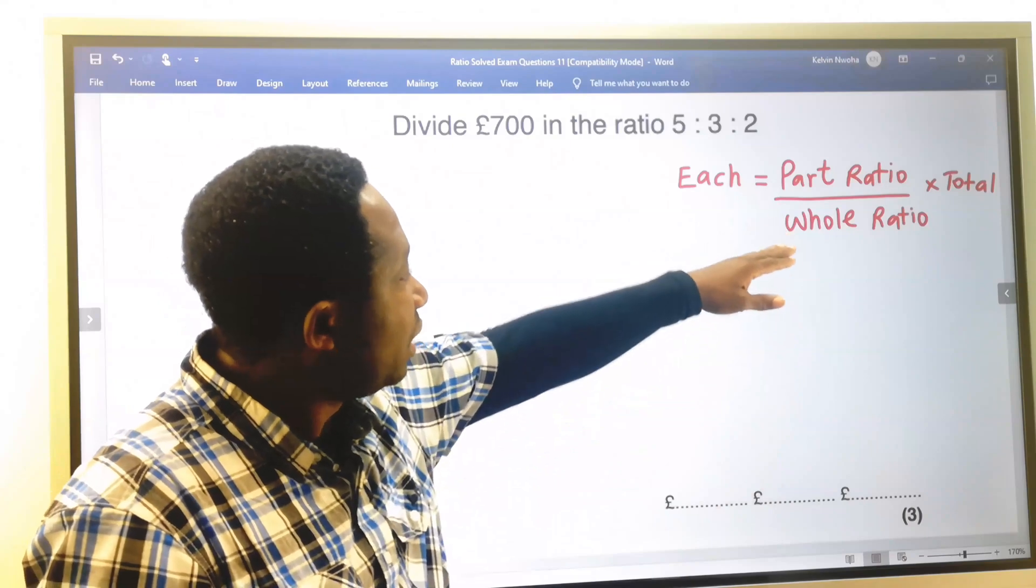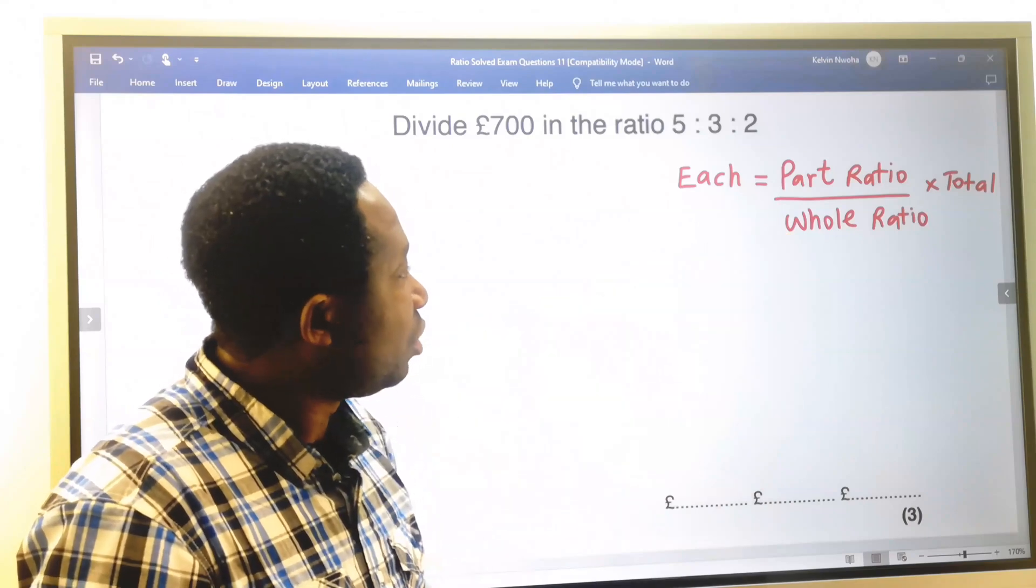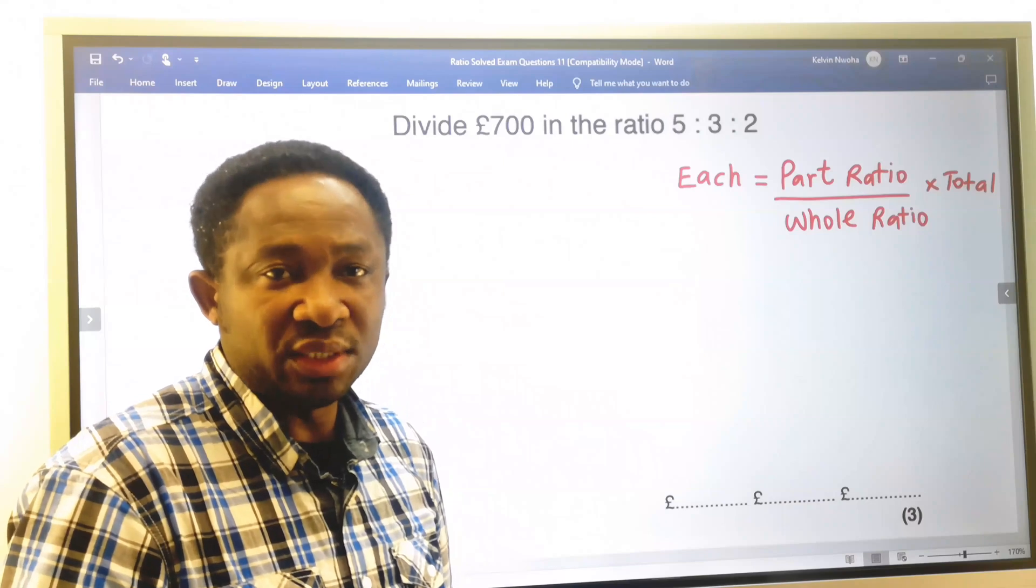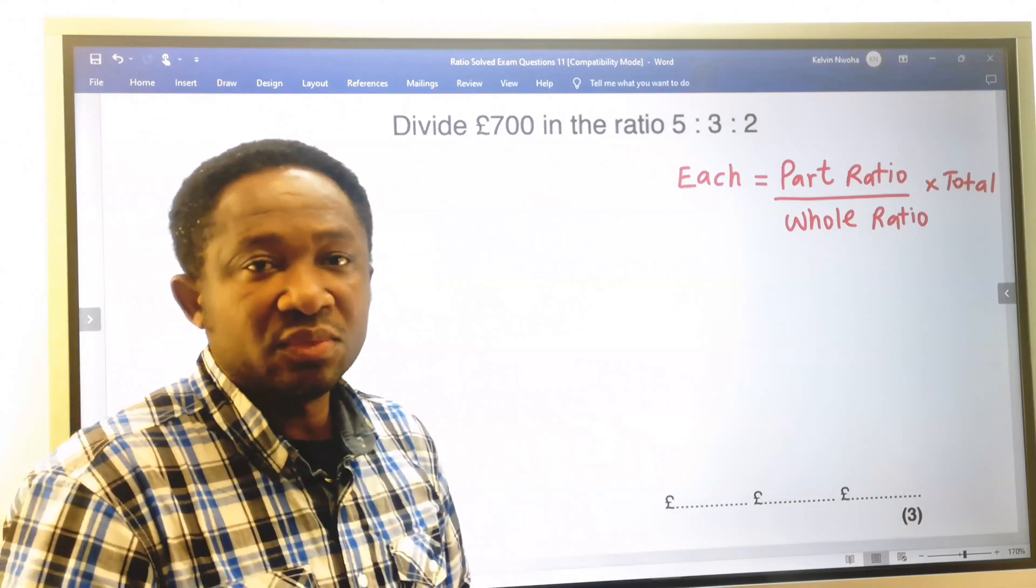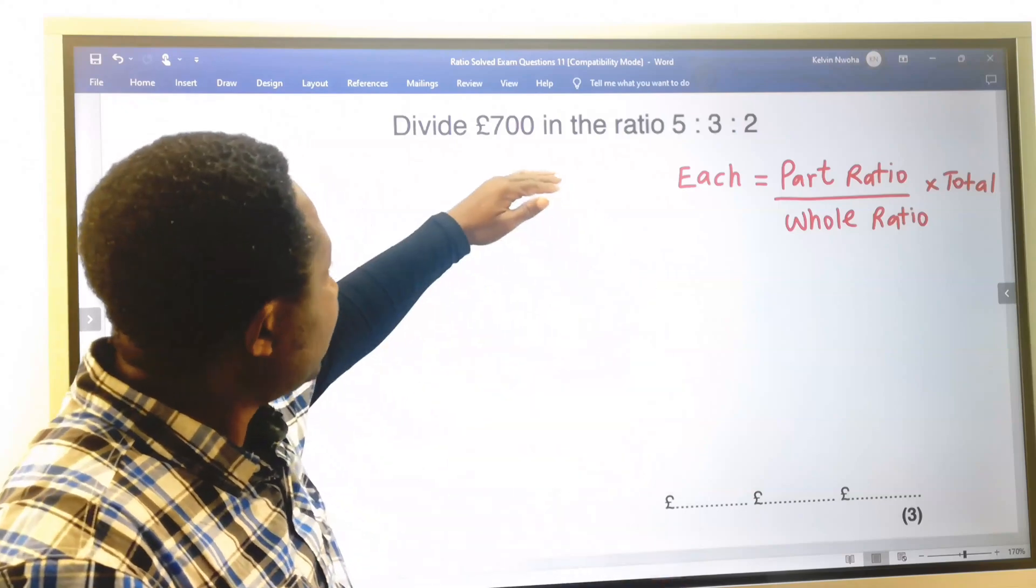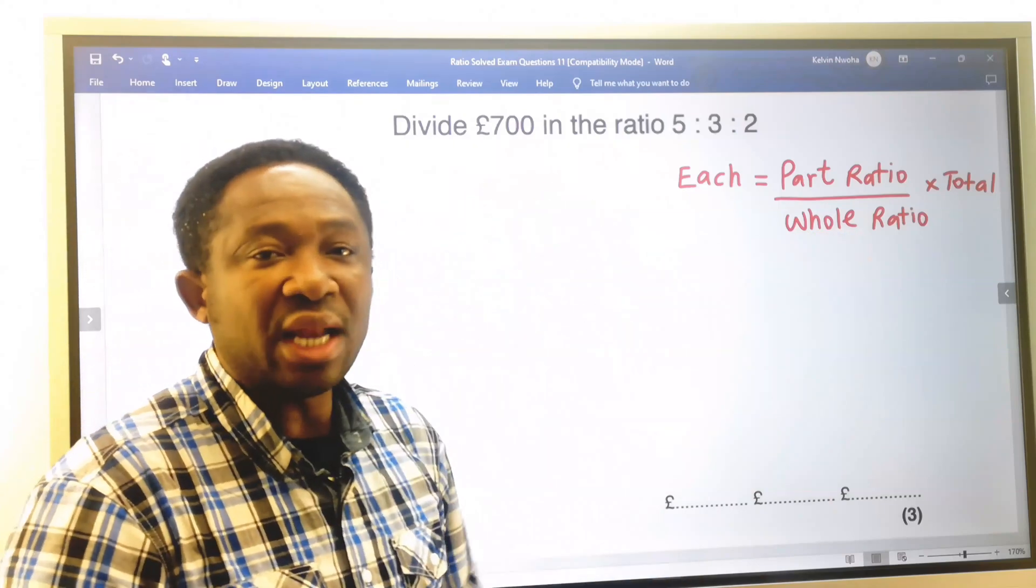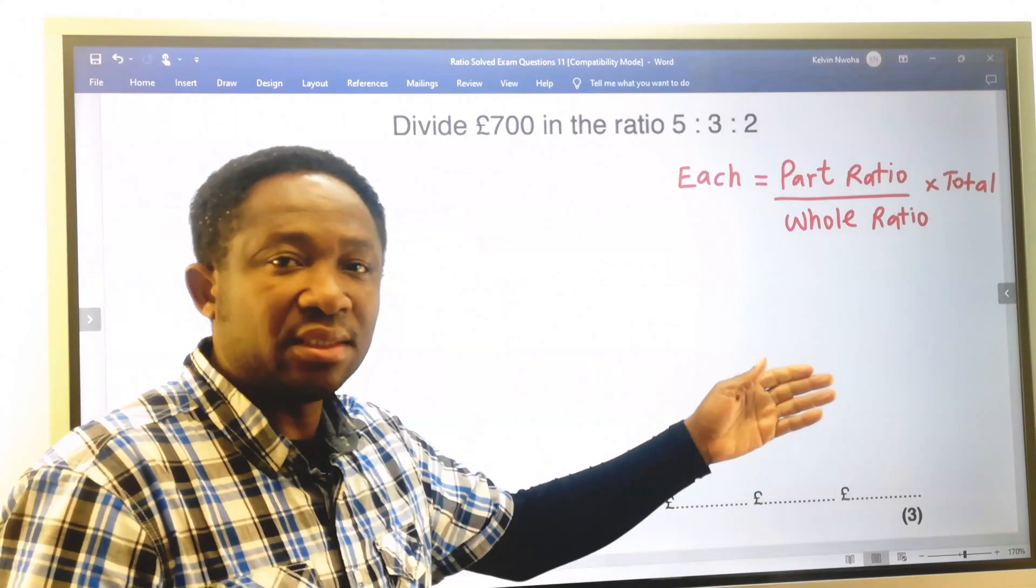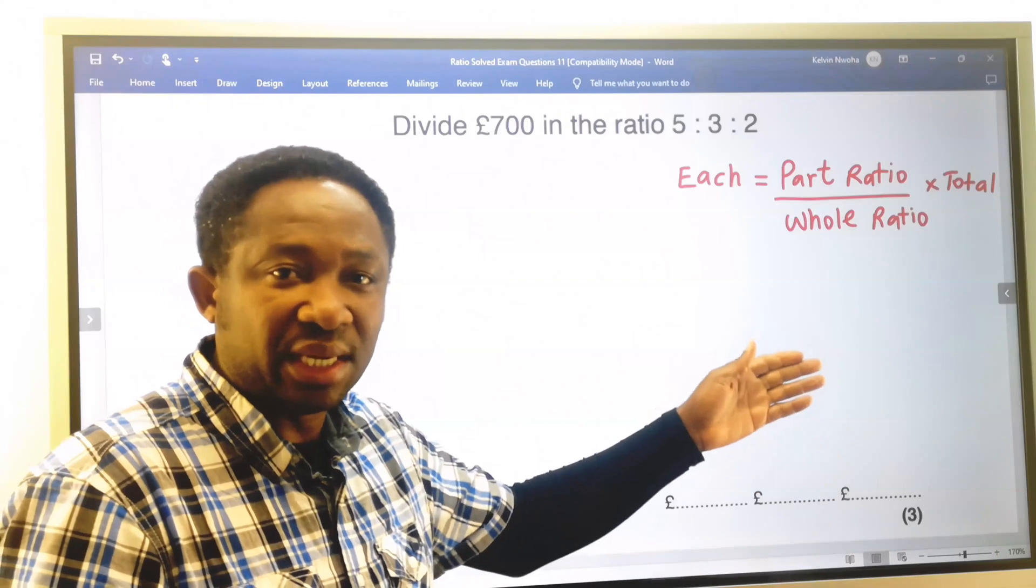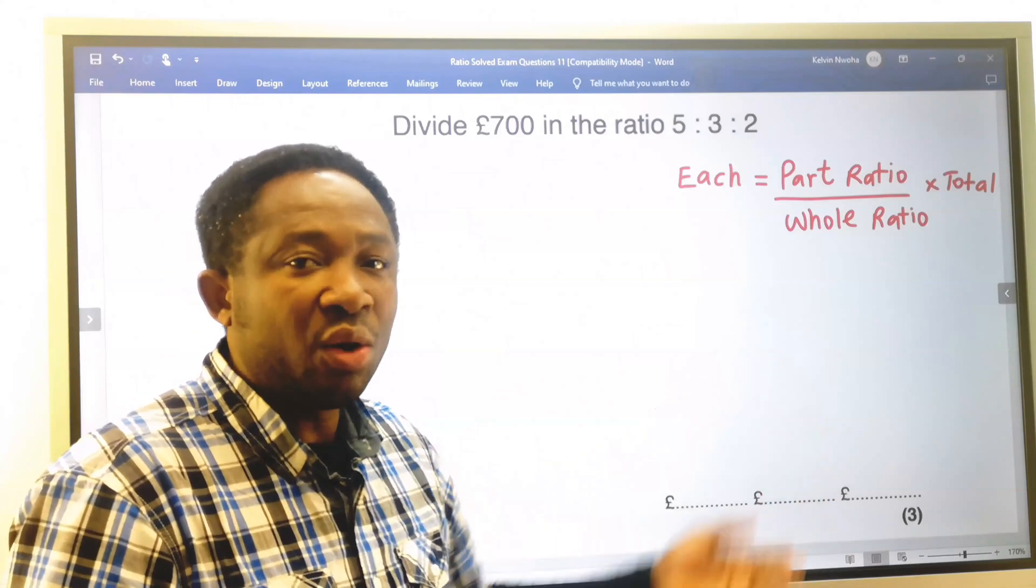Part ratio divided by the whole ratio multiplied by the total amount of money, because money here is involved. If this was an item, that would be the total item provided. In some cases, it can be total pen, it can be total pizza, it can be the total of anything.